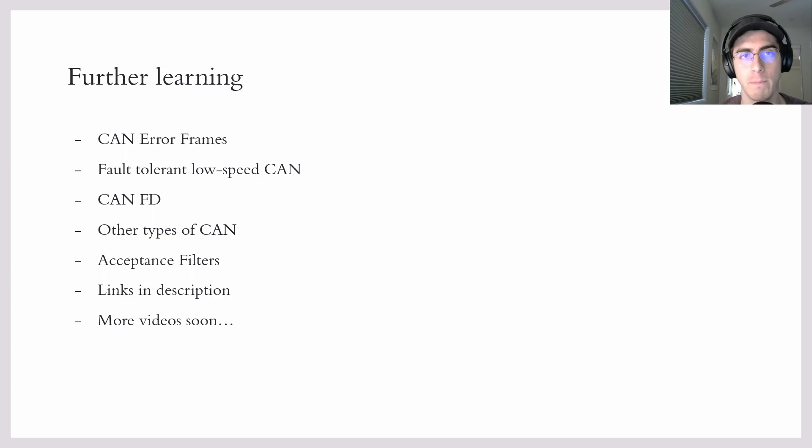That pretty much covers the basics of CAN. So there's a lot more to this protocol to know, such as CAN error frames. There's fault-tolerant low-speed CAN. There's CAN FD. CAN FD is just really fast CAN. It's pretty new. There's acceptance filters. Acceptance filters are pretty much just a way for a CAN node to ignore data it doesn't care about. So I'll leave some links in the description for further reading. And I've got some more videos coming soon where I might go into more detail about some of these topics.